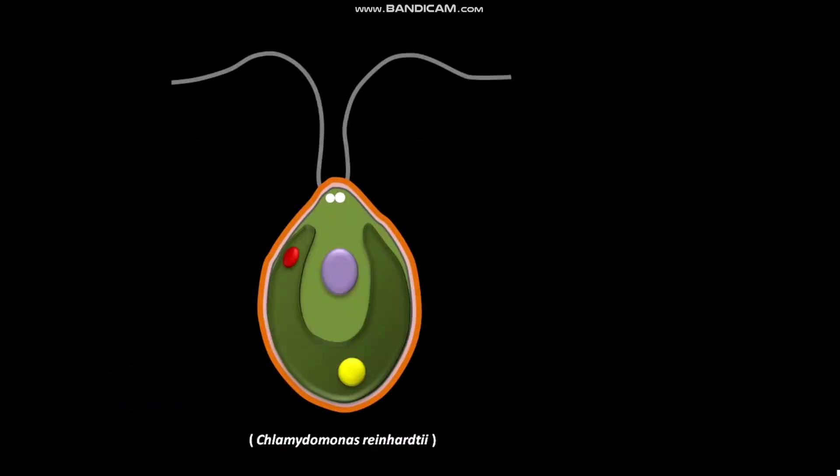The Chlamydomonas reinhardtii is a unicellular green alga. This is one flagellum of Chlamydomonas reinhardtii.